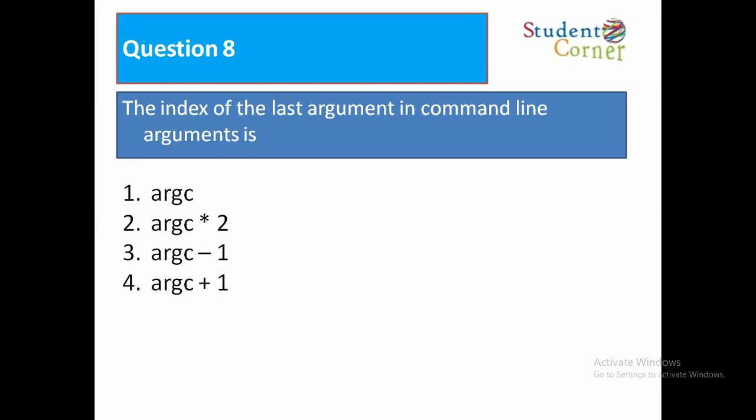Question number 8. The index of the last argument in command line arguments is: option 1 argc, option 2 argc into 2, option 3 argc minus 1, option 4 argc plus 1. The answer is argc minus 1.